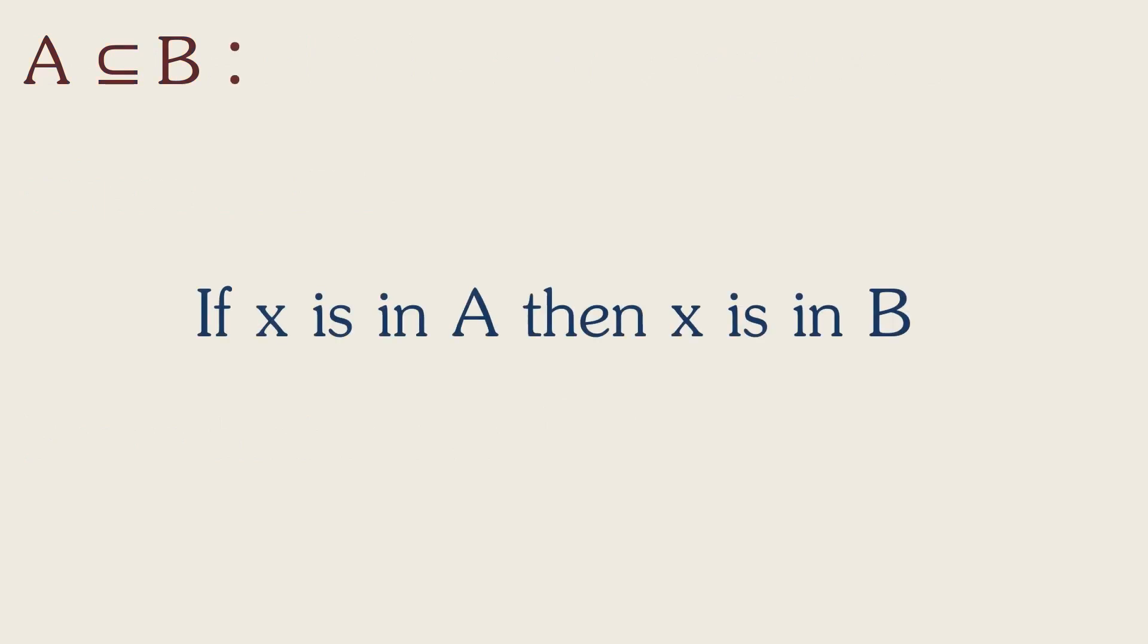So here's a definition for a subset. A is a subset of B, means if X is in A, then X is in B. This is another way of saying everything in A is in B. It's a loose, inclusive definition of a subset. It means A is a part of or equal to B. So it works for our theorem.